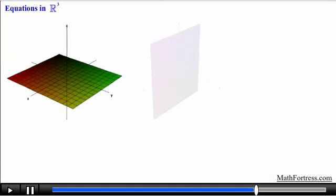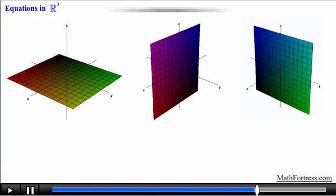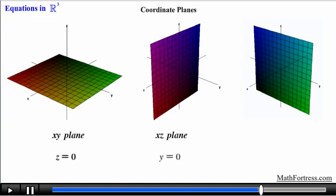At this point we have equations to describe the coordinate planes of a 3-dimensional coordinate system. The x-y plane can be represented by the equation z equals 0. The x-z plane is represented by the equation y equals 0, and the y-z plane is represented by the equation x equals 0.